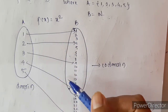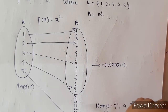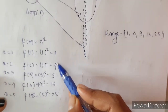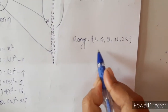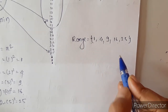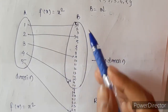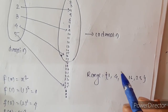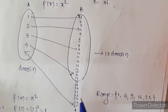So we can say this is a function, and the range of the function is {1, 4, 9, 16, 25}. So set A is the domain of the function, the entire set B is the co-domain of the function, and the range of the function is only those elements from B which are related to elements from set A.